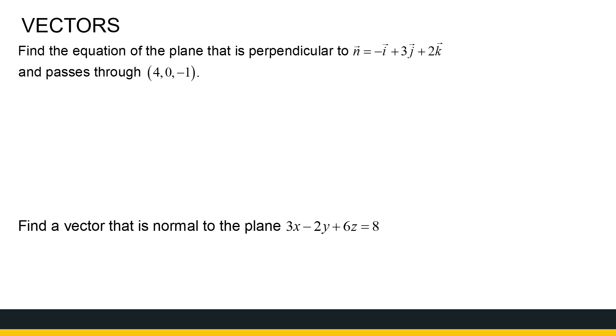We're given a normal vector -i + 3j + 2k. You can also write it in a different notation: (-1, 3, 2). And I've got a point on the plane. Find the equation of a plane that's perpendicular to this normal vector and passes through this point. Well, now we've got our general formula.